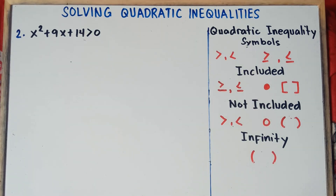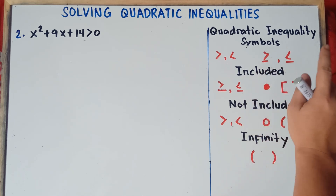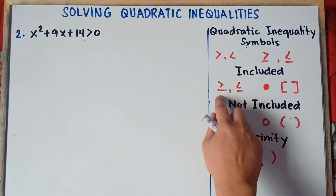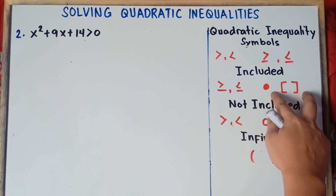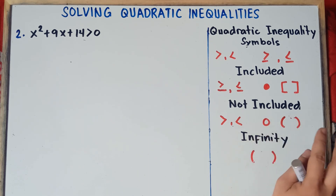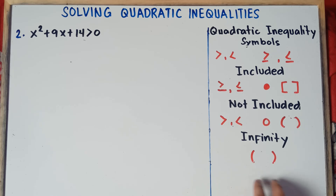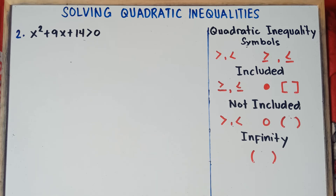So these are the quadratic inequality symbols. We have greater than, less than, greater than or equal, and less than or equal. For included values, we use greater than or equal or less than or equal — we use a closed circle and brackets. For not included, we use greater than or less than — we use an open circle and parentheses. For infinity, it's always parentheses. This is very important in making solution sets.